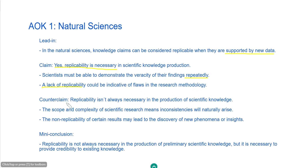For the counterclaim, replicability isn't always necessary in the production of scientific knowledge. The justification is that the scope and complexity of scientific research means inconsistencies will naturally arise. Moreover, such sources of non-replicability could actually be categorised as helpful, as they may in fact lead to the discovery of new phenomena or insights. The mini conclusion here is that whilst replicability is not always necessary in the production of preliminary scientific knowledge, it is necessary to provide credibility to existing knowledge.